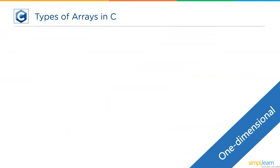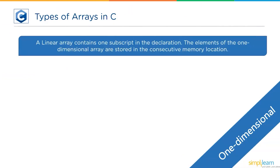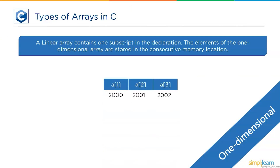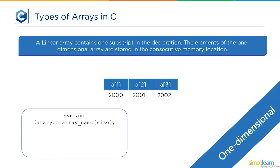First, let's start with one-dimensional arrays. One-dimensional arrays are also called linear arrays — they accept one subscript to mention the size of the array. The elements are stored consecutively in memory. The syntax is: data type, array name, and size. For example, int a[15]. Now let's execute a simple program to understand the one-dimensional array and see how to access and change array elements.